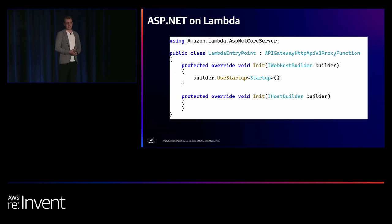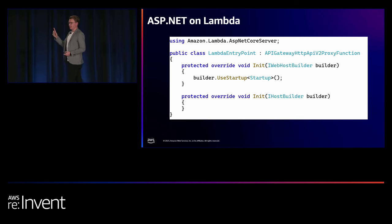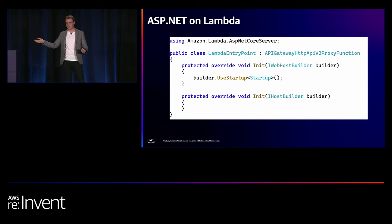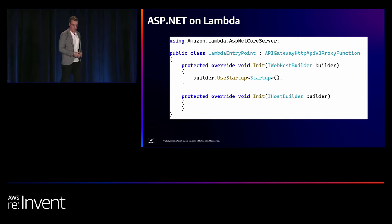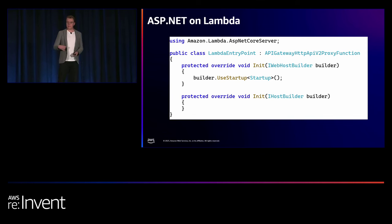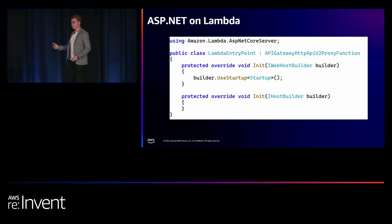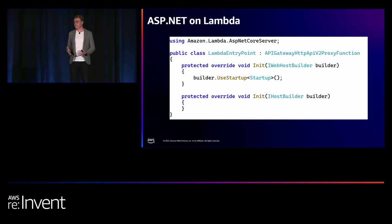If you add a reference to the Amazon.Lambda.AspNetCoreServer NuGet package, and if you're building ASP.NET applications in the more traditional way — not using minimal APIs — you need to add a single new class to your project. The important thing about this class is the base class you inherit from, which is one of three different base classes from that package. These base classes all have a method called FunctionHandlerAsync that Lambda invokes when a request comes in, containing the logic to transform that request into something ASP.NET can understand.